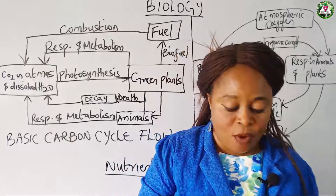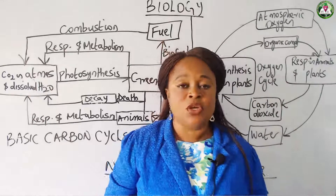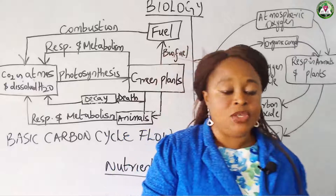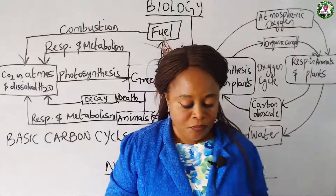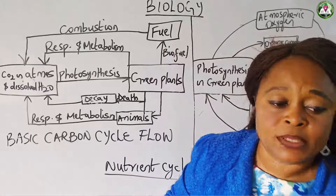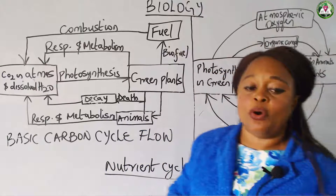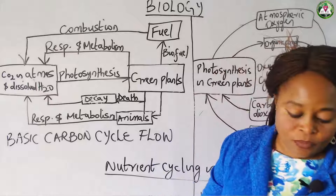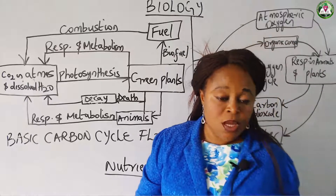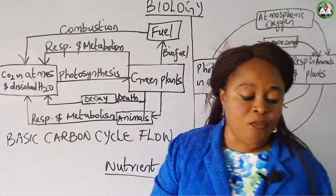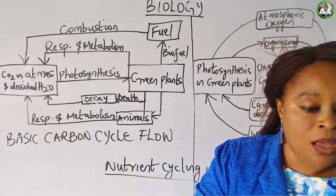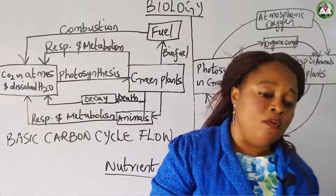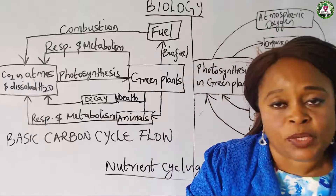Organic matter, which is also made from carbon compounds, helps to replenish soil nutrients. The second topic we are going to talk about in this particular topic of nutrient cycling in nature is the oxygen cycle. The oxygen cycle is also the series of processes by which oxygen is removed and also restored back into the atmosphere.